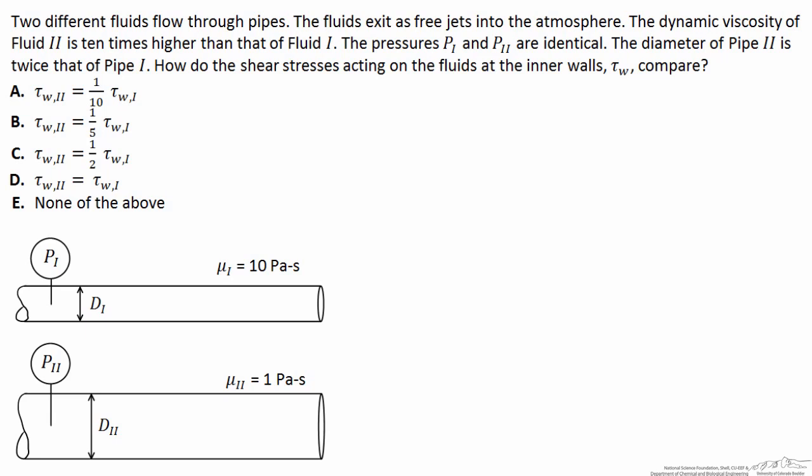Two different fluids flow through two different pipes, and they both exit the pipes as free jets into the atmosphere. The viscosity of fluid 1 is ten times higher than the viscosity of fluid 2, but the diameter of pipe 2 is twice as big as the diameter of pipe 1.